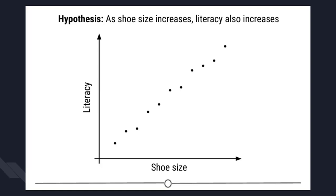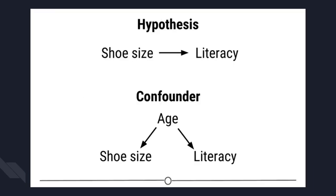For example, suppose I have a hypothesis that as shoe size increases, literacy also increases. I would choose a measure of literacy, such as reading fluency, as my dependent variable. I would design an experiment measuring shoe size and literacy level of 100 individuals — sample size is the number of experimental subjects you will include in your experiment. Before collecting data, I need to consider if there are problems with this experiment that might cause an erroneous result. In this case, the experiment may be fatally flawed by a confounder.